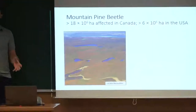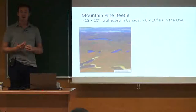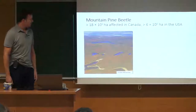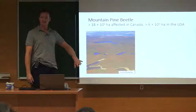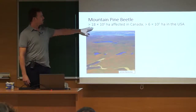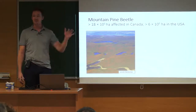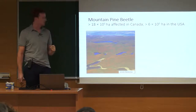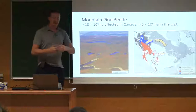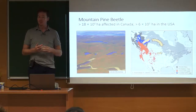The insect I want to talk about today is the mountain pine beetle — a native species of bark beetle found in western North America. This photo shows the type of damage they can cause: all the red trees have been killed by the mountain pine beetle. In total, about 18 million hectares have been affected in Canada, and over 6 million hectares in the U.S. in high elevation pine ecosystems.